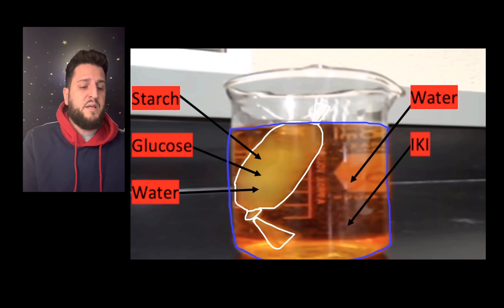On the outside, within the beaker, outside of the dialysis tubing, we have the liquid portion. So you have water and the Lugol solution, which is also known as IKI.